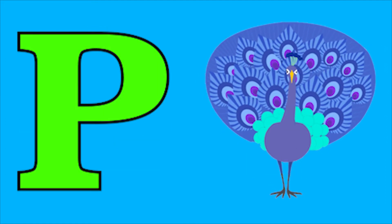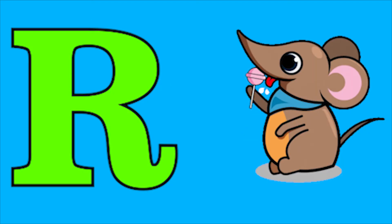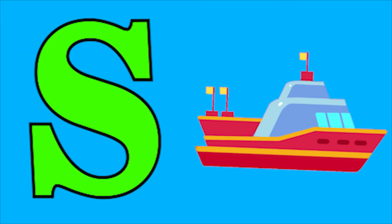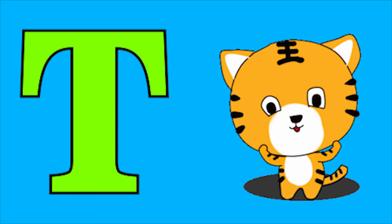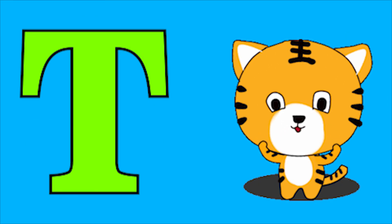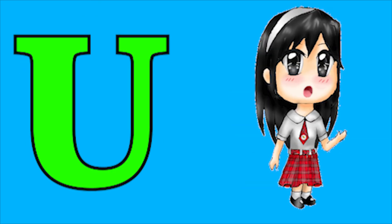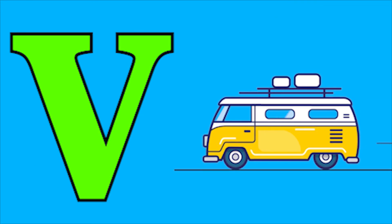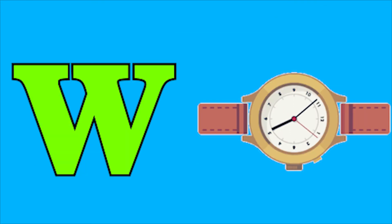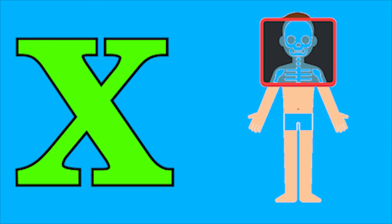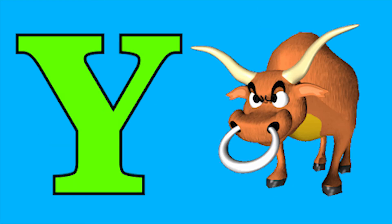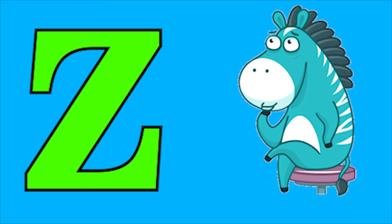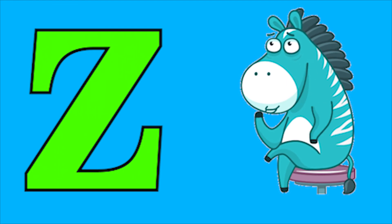P for peacock, Q for queen, R for rat, S for sheep, T for tiger, U for uniform, V for van, W for watch, X for egg spray, Y for yard, Z for zebra.